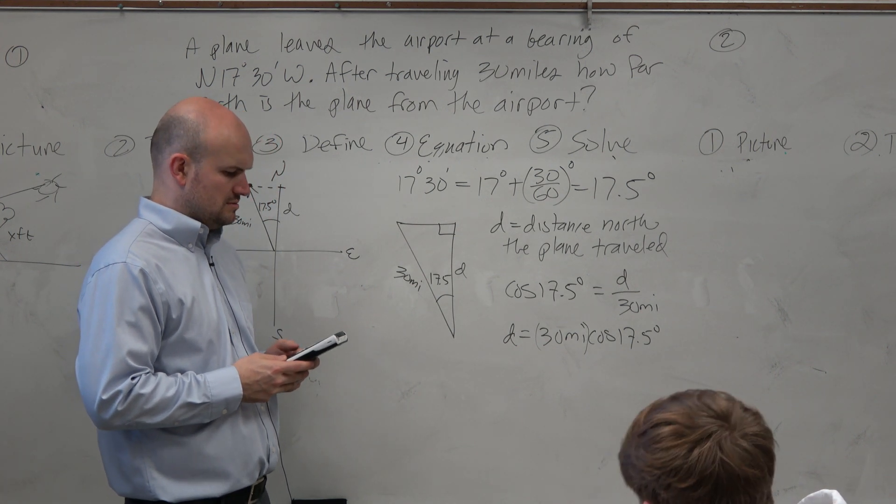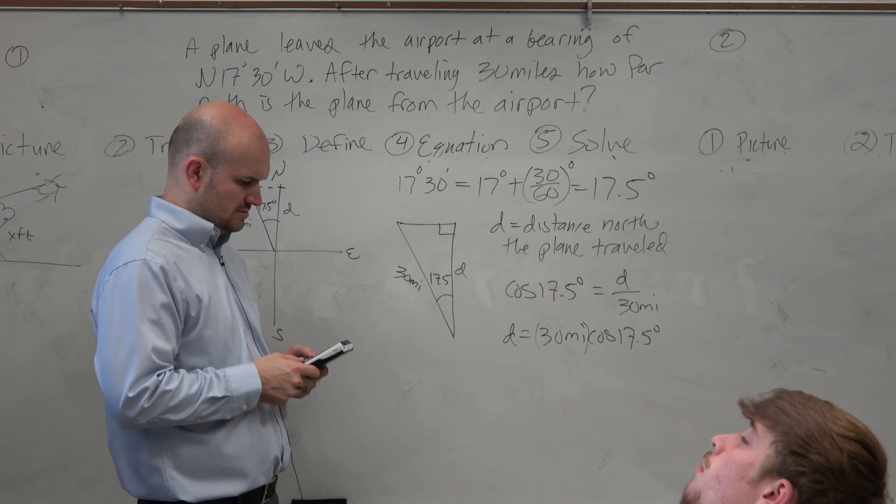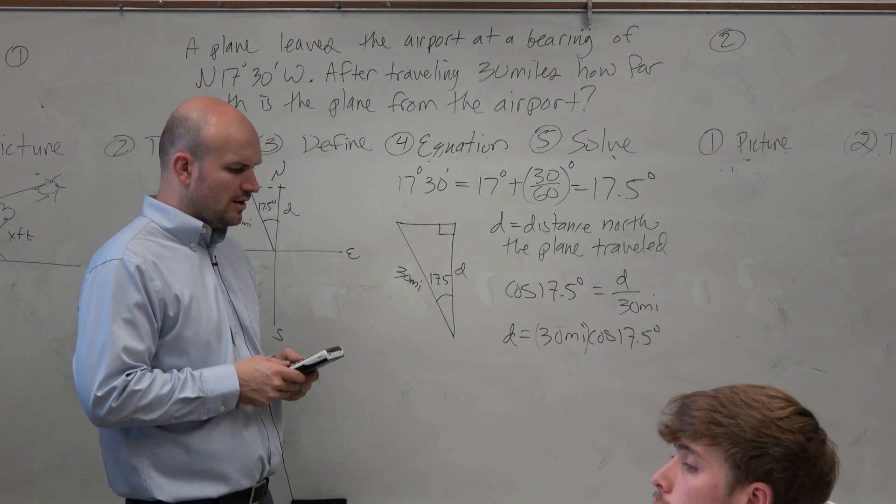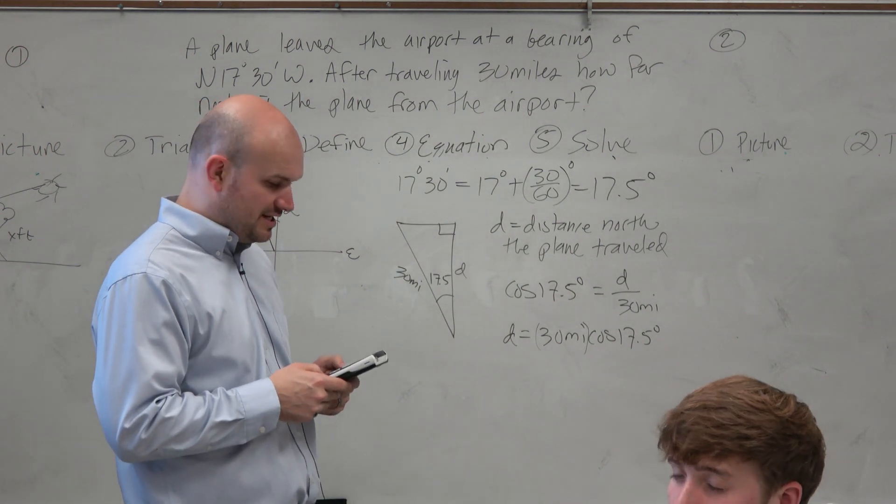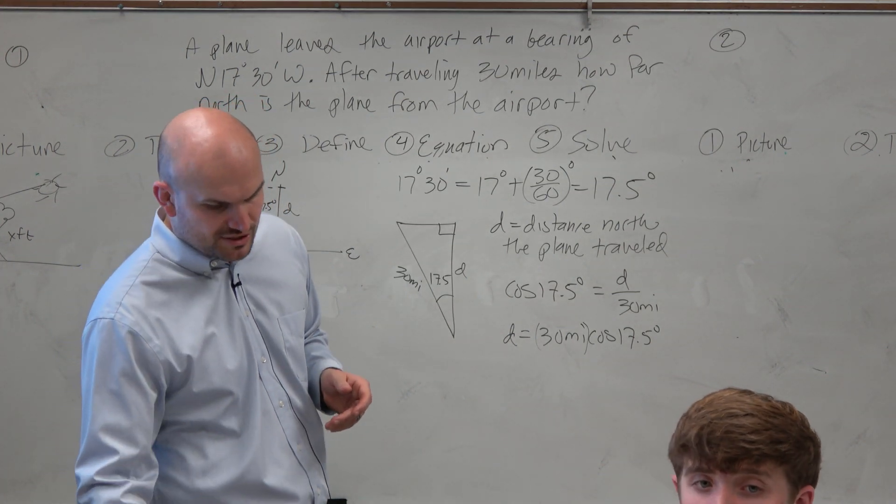And then let's just type that in. So you do 30 times the cosine of 17.5. And, oh, OK. So round to the nearest thousandth. That would be 28.6112.